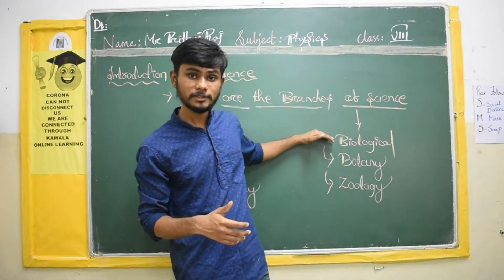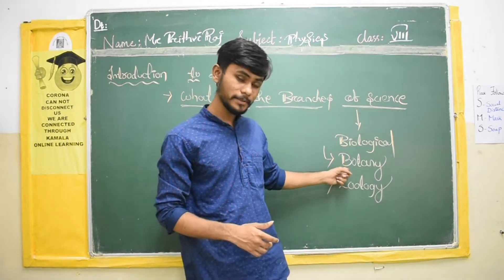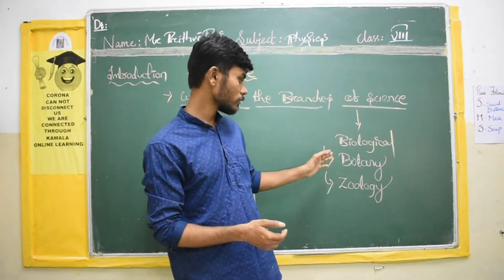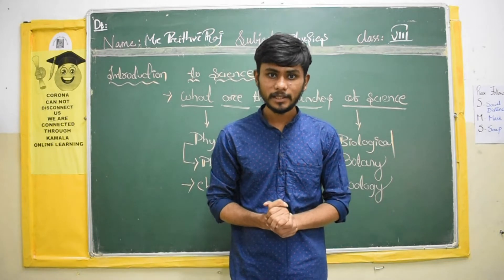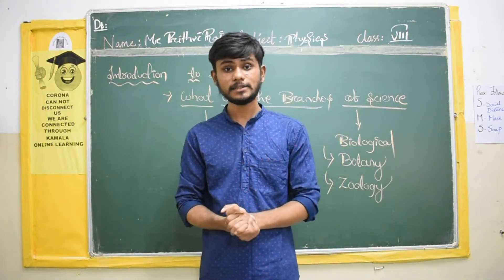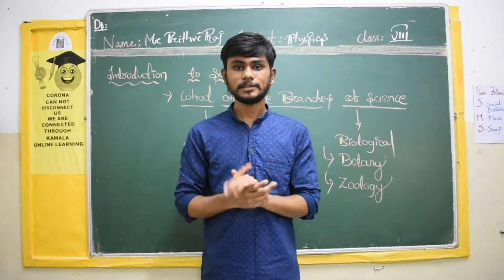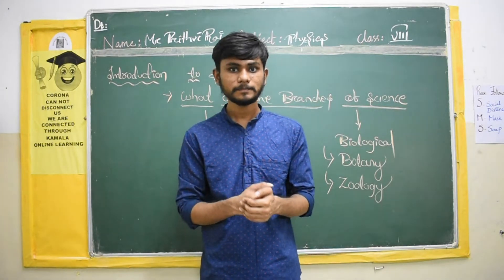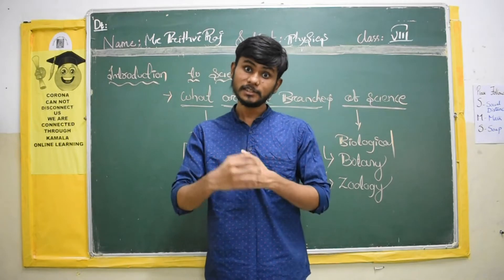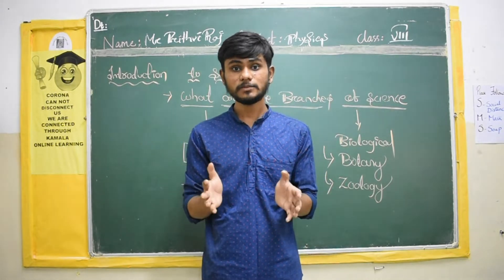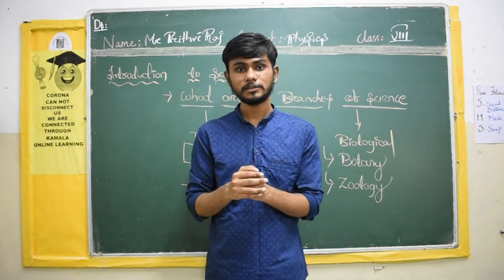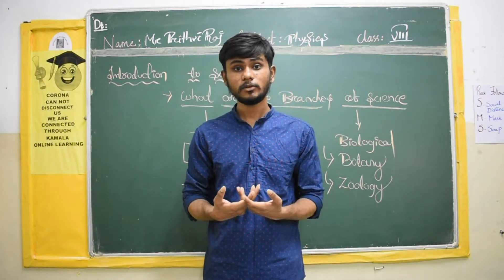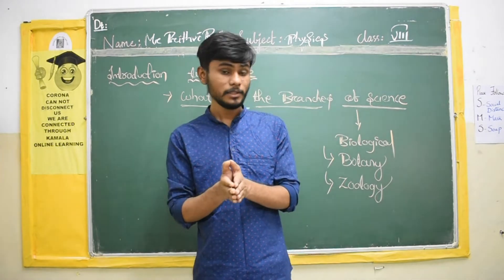Biological science has further two divisions. First one is botany, second one is zoology — it is a broad distinction up to your graduation. Botany is a branch of biological science which deals with all the plants and some microorganisms, like algae. Zoology is the other branch of biological science which deals with all the animals and their functions — humans, dogs, lions, and so on.